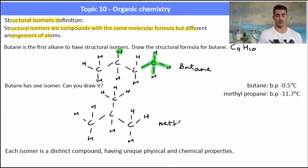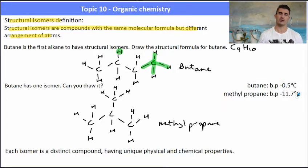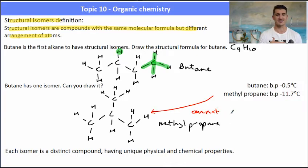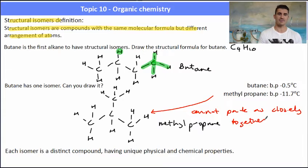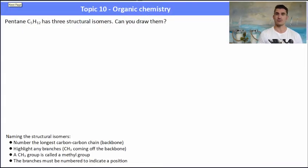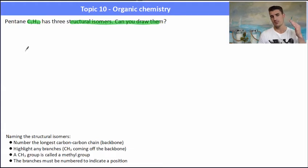The straight-chain isomer is named butane, and the branched one is called methylpropane. It has a different boiling point than butane because methylpropane can't stack as nicely together. Each isomer is a distinct compound with unique chemical and physical properties. Pentane (C₅H₁₂) has three isomers — pause the video now and have a go at drawing them.